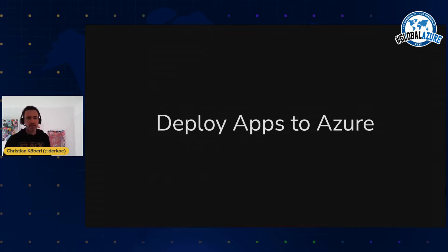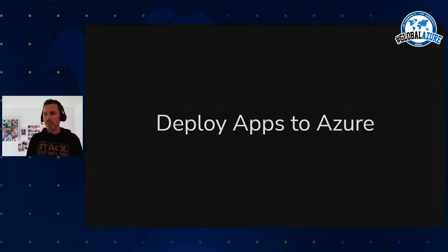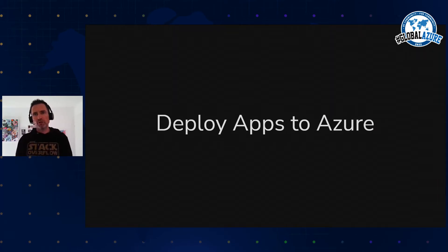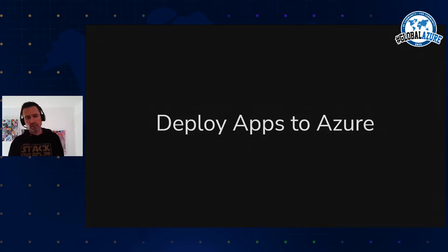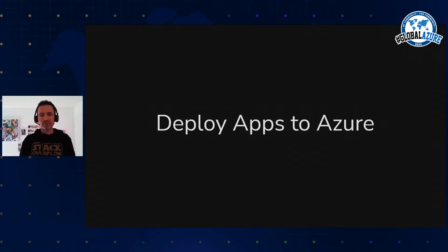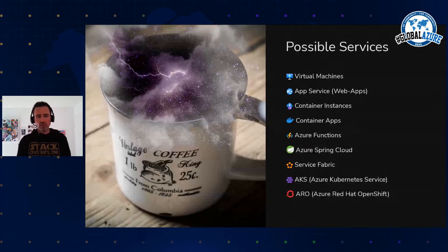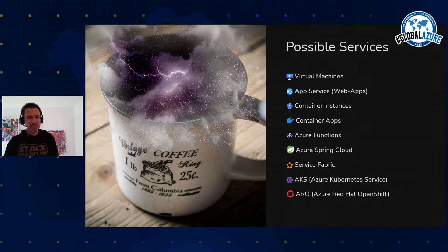Let's dive in. The first thing I want to talk about is how to deploy apps to Azure, especially Java apps. What I'm talking about today also applies to other apps like Python or Ruby — most things I'm saying adapt to other platforms. .NET is maybe a little bit special because it always has a special place in the Microsoft environment, but for all other platforms it's quite the same.